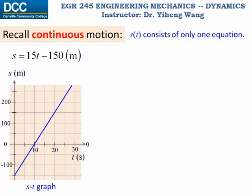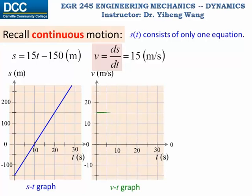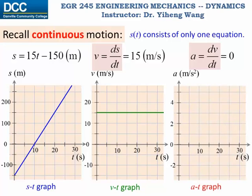We can differentiate to find that the velocity equals ds over dt, which is a constant 50 meters per second. We can graph this constant function, and that's the v-t graph, showing the relation between velocity and time. Differentiating again gives acceleration a equals dv over dt, which is a constant zero, and we can graph this as the a-t graph — acceleration is zero at all times.